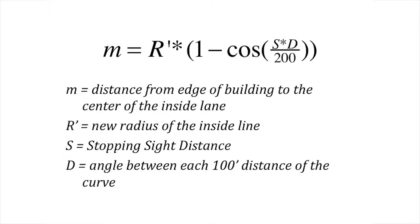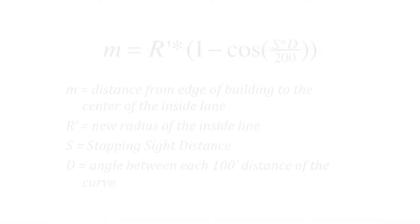In this problem, we will use the following equation. We will be solving for M, which is the distance from the edge of the building to the center of the inside lane. R is the radius, S is the required stopping sight distance, and D is the angle between each 100 feet of the curve.